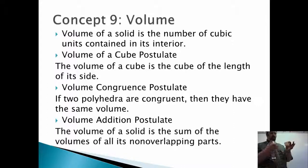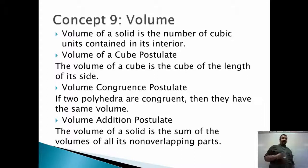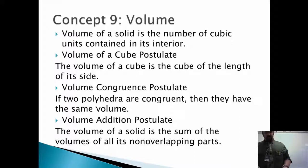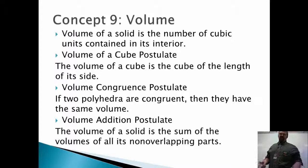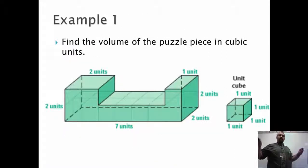So, volume is the number of units contained within. The volume of a cube is side times side times side. If two polyhedra are congruent, they have to have the same volume. And if I have shapes that are hard to find the volume of, I can split them into easier shapes and add those separate volumes together. Now we know what volume is — let's try and calculate it.